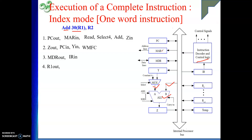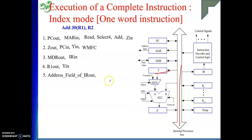The ALU performs the addition. We need to bring this 30 and content of R1 to the inputs of the ALU, then give the add signal; the Z register will have the result. So we generate: R1 out, Y in — this puts R1 into register Y. Then address field of IR out — that 30 is now on the bus. Select Y brings the Y register content to the A input of the ALU. Now both inputs are ready, so we give the add signal. The effective address is produced.